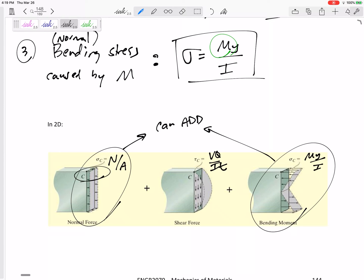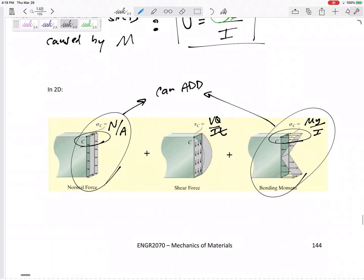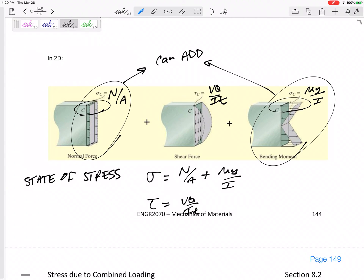Now, we got to be careful whether it's positive or negative, but we can add them. And so the state of stress, if I ask, hey, what is the state of stress at this cut at this location? Then I'm saying, okay, what is sigma and what is tau? Tau is just the VQ over IT, but the sigma would be the N over A and the MY over I. Sigma would be the N over A and the MY over I.